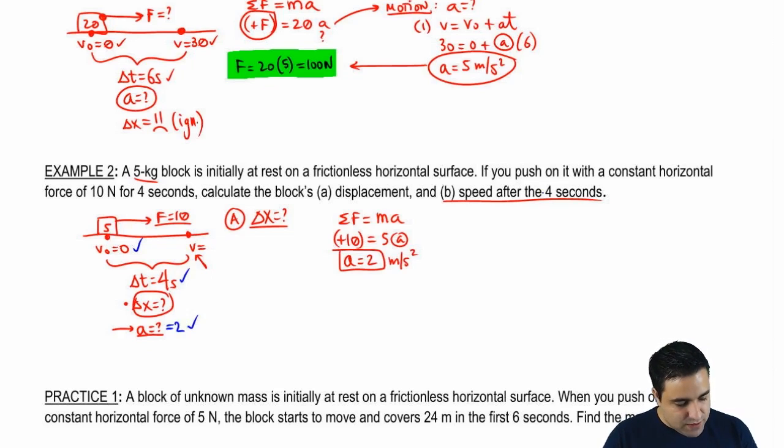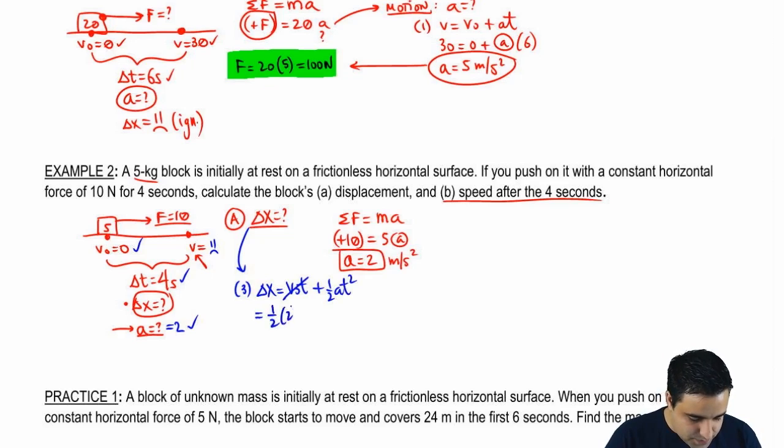This V, I'm going to want it later, but for now it's my ignored variable. This final velocity here tells me that I should use the third equation. Delta X equals V initial T plus half of AT squared. This goes away and I'm left with just this. So the final answer is 16 meters for the first part.